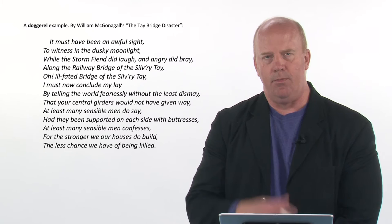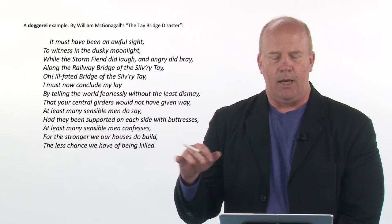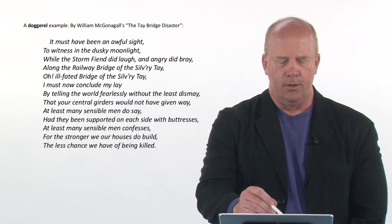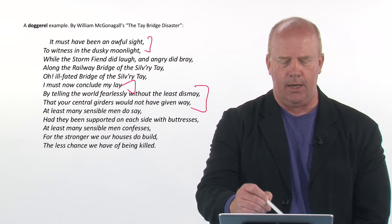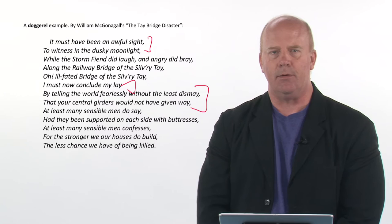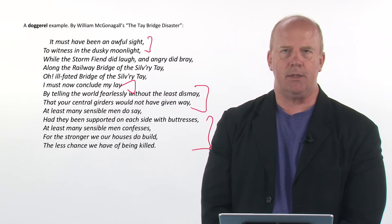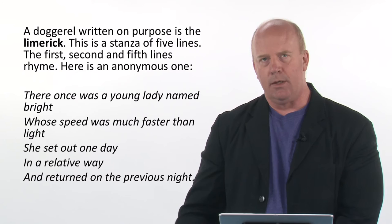Here's an example — I used small text on purpose to show the actual length. Take a look at this: 'The Tay Bridge Disaster.' You can see the verse lengths vary — some are very short, some very long. The rhyme scheme includes: sight, moonlight, bray, Tay, Tay, lay, may, way, say — then buttress, confess, build, killed. So there is a rhyme scheme, but it's pretty irregular. This is an example of doggerel.